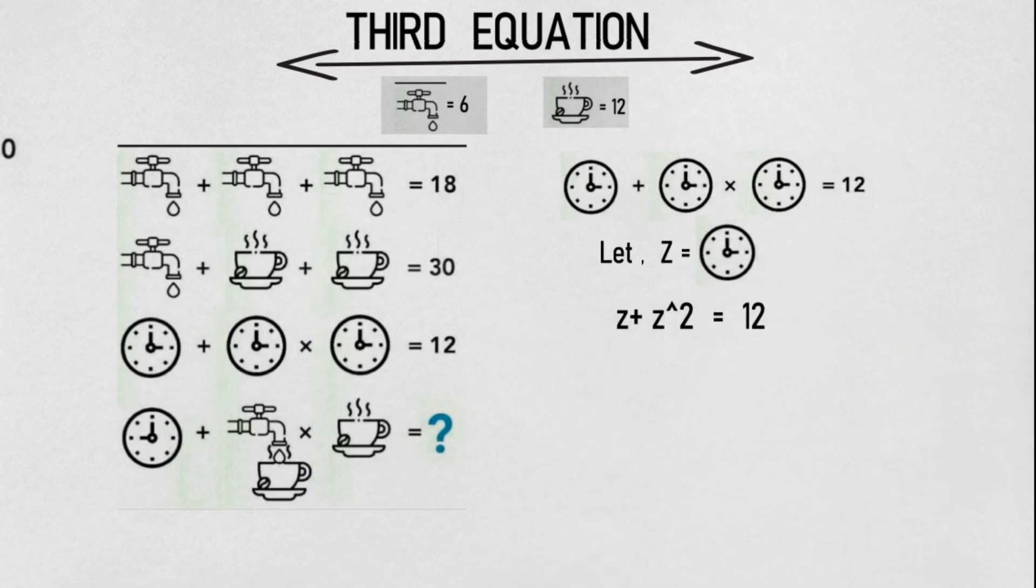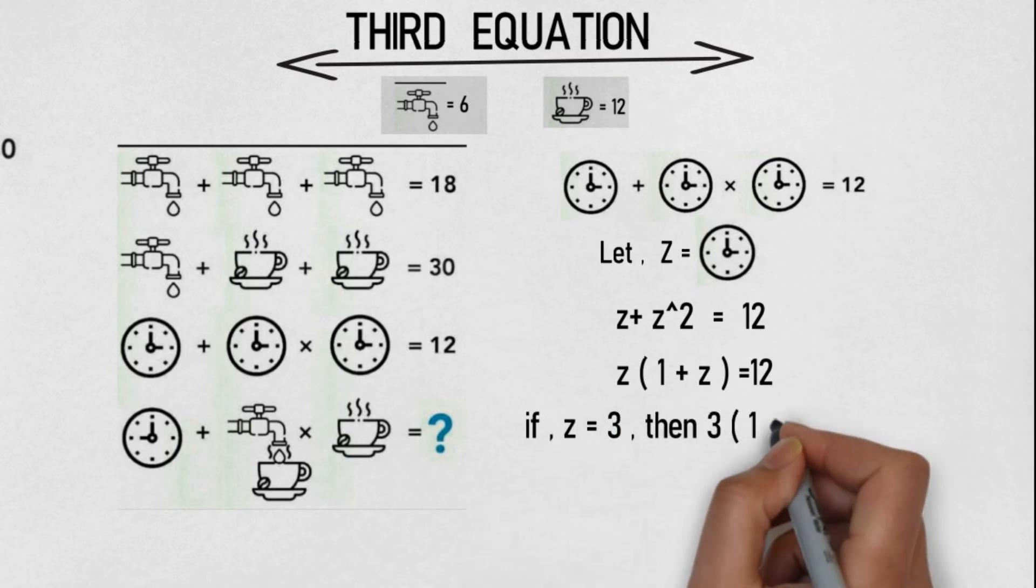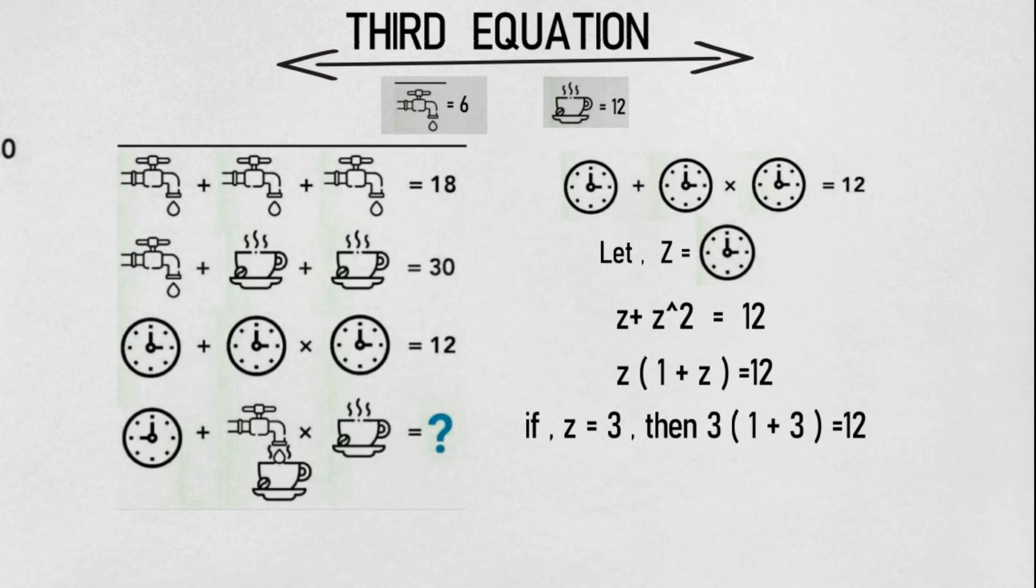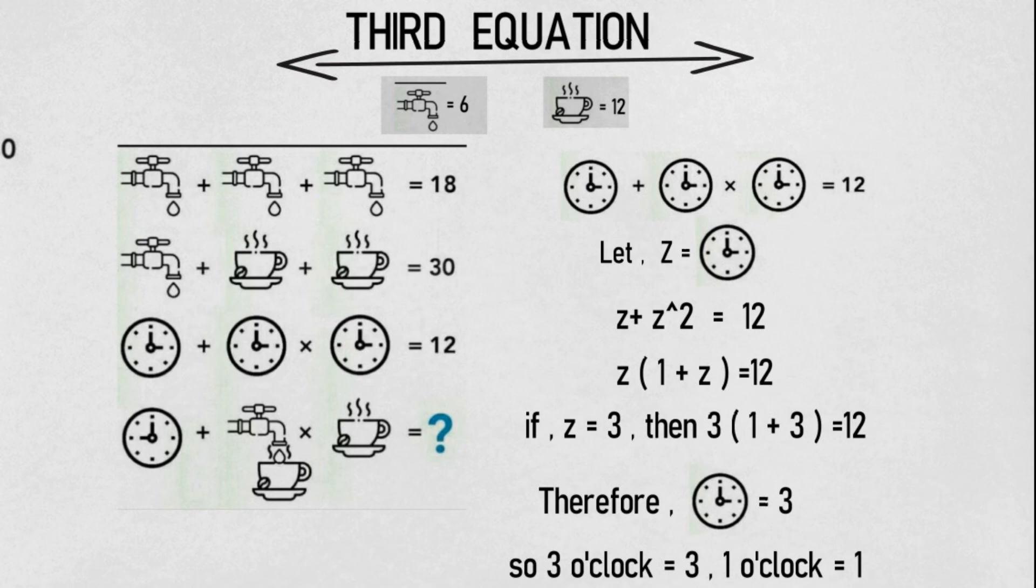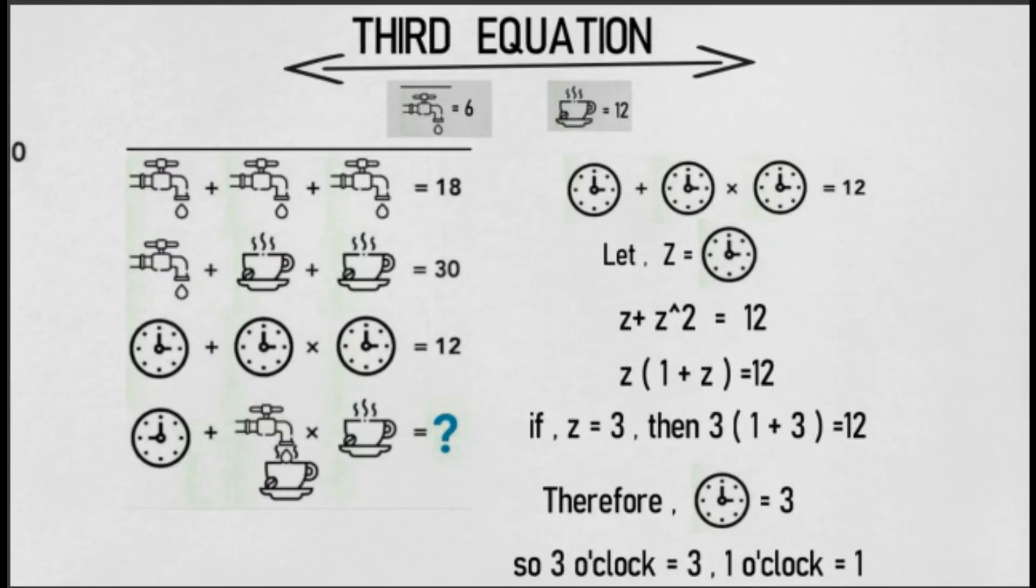Now taking Z common, if we take Z common then we will get Z times (1 plus Z) equal to 12. Now friends, we will try to put Z's value. If we put Z's value as 3, then our equation will satisfy. That is 3 times (1 plus 3) is equal to 12. 3 times 4 is equal to 12. So friends, clock ki value is equal to 3. Now friends, in this clock 3 o'clock is shown and its value is also 3. So if 3 o'clock is equal to 3, from unitary method 1 o'clock will become 1.